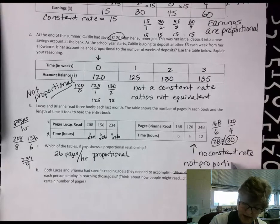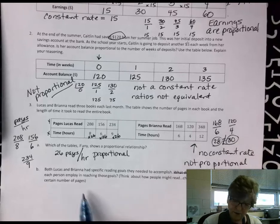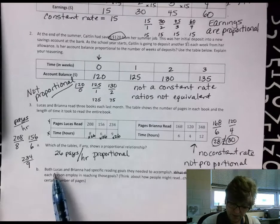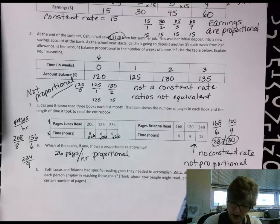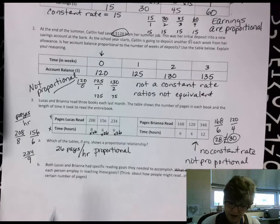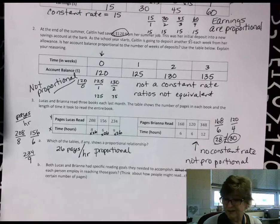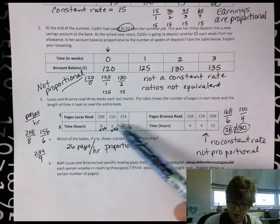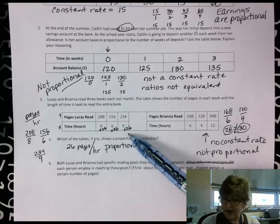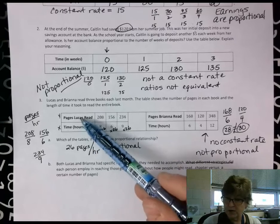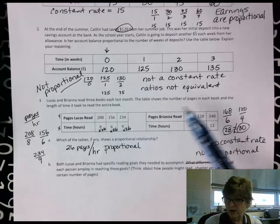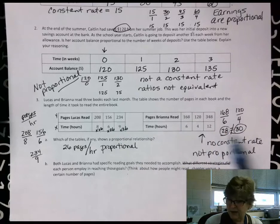This last question was asking if they both had specific reading goals they needed to accomplish. They both had those. I guess my big question would be what was different. And as I look at this, even though they changed how many they read at a time, Lucas stayed very consistent whereas Brianna did not.